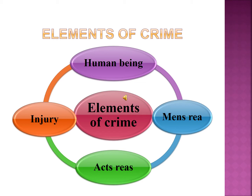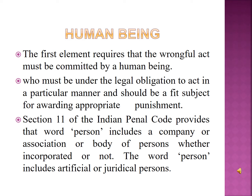The first element of crime is human being, which requires that the wrongful act must be committed by a human being. That means any non-living thing or animals are not considered in the category of a person or a human being. Whereas in ancient times when criminal law was largely dominated by the idea of retributive theory, punishments were inflicted on animals also for the injury caused by them. For example, if a dog bites anyone he is punished, or a horse was killed for kicking a man. But in the Indian Penal Code, if an animal causes an injury, we do not hold the animal liable but the owner is held liable for such injury.